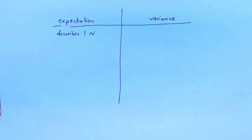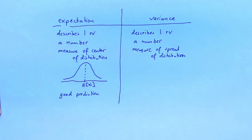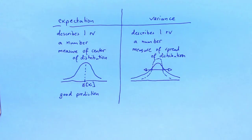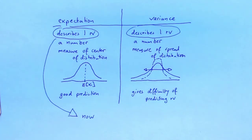The expectation and the variance both describe a single random variable using a number. The expectation is a measure of the center of the distribution — if we have to guess how a random variable would realize, the expectation gives a good prediction. The variance is a measure of the spread of the distribution. If the variance is small, then it is easier to predict the random variable. Now we want to move on from looking at a single random variable to looking at multiple random variables at the same time.